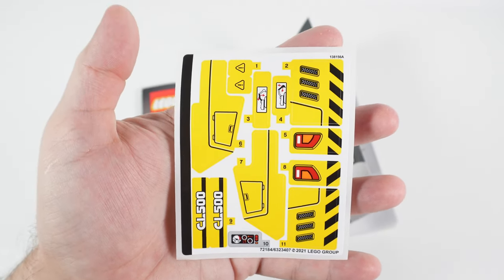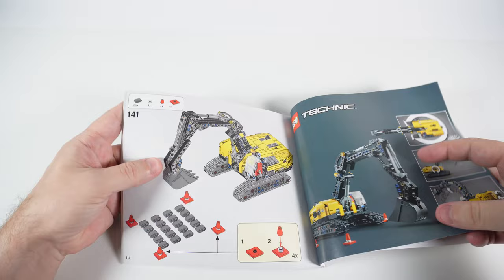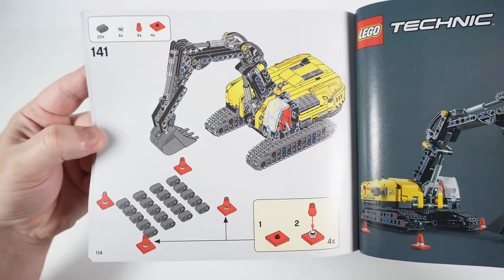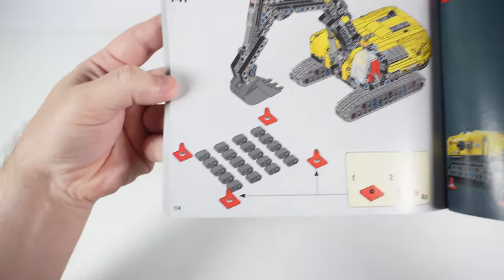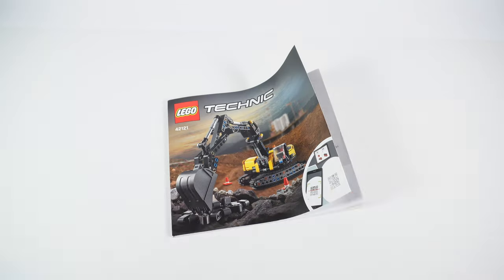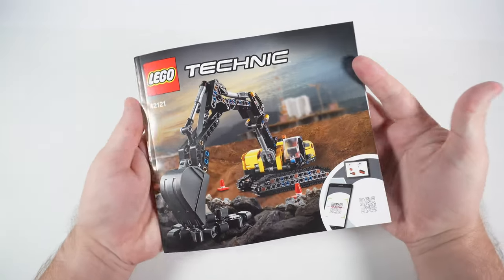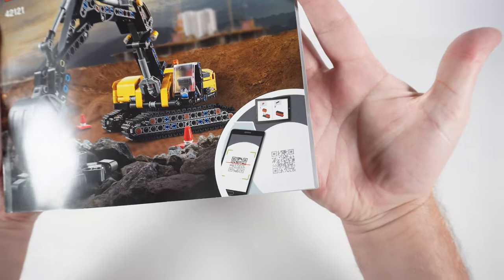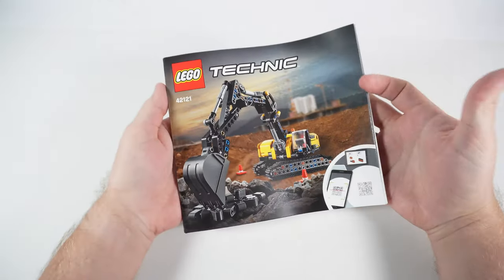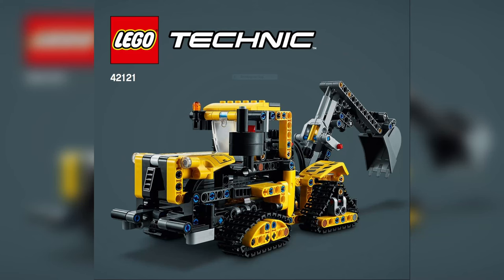The instruction book is not too thick and contains 114 pages. As often happens for two-in-one sets, the included book is only for the primary excavator model. If you want to build the alternative model, you'll need to download another book from the LEGO site or the LEGO building app. The downloaded book for the tractor contains 126 pages.